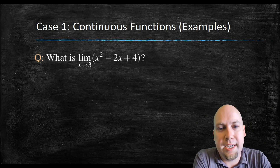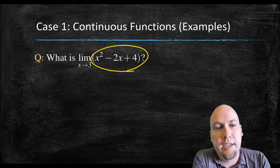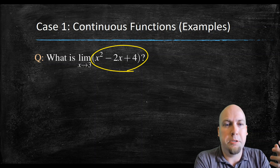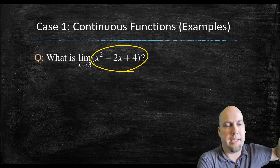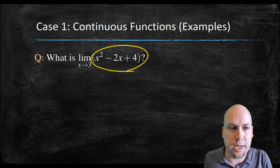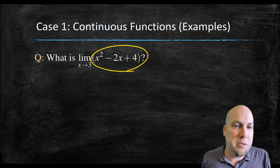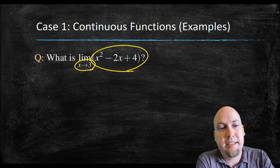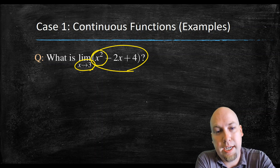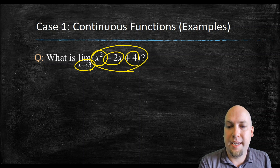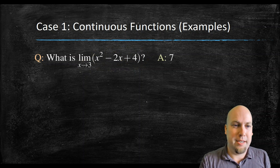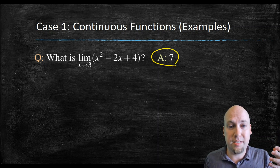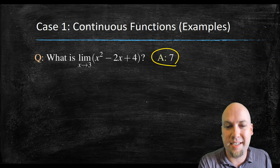Just a couple quick examples to pin down that idea. The limit as x goes to three of this function — well, you ask yourself, is that function continuous? Yeah, it's a polynomial. Polynomials are continuous — their graphs just go up and down however many times and shoot off to infinity. There are no jumps, no holes. So if I want to compute this limit, all I have to do is plug x equals three into the function. I get three squared minus six plus four, which is nine minus six plus four. That's seven, and that's what the limit equals as well — not just the function value, but also the limit, because it's a continuous function.